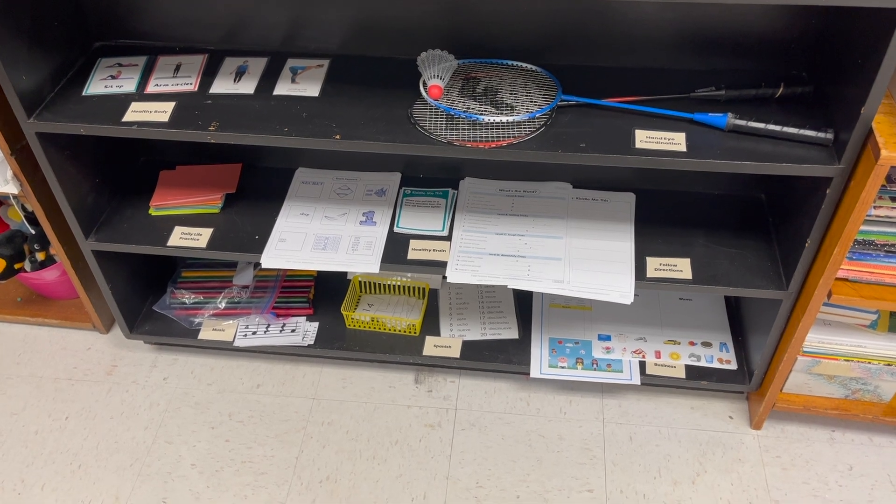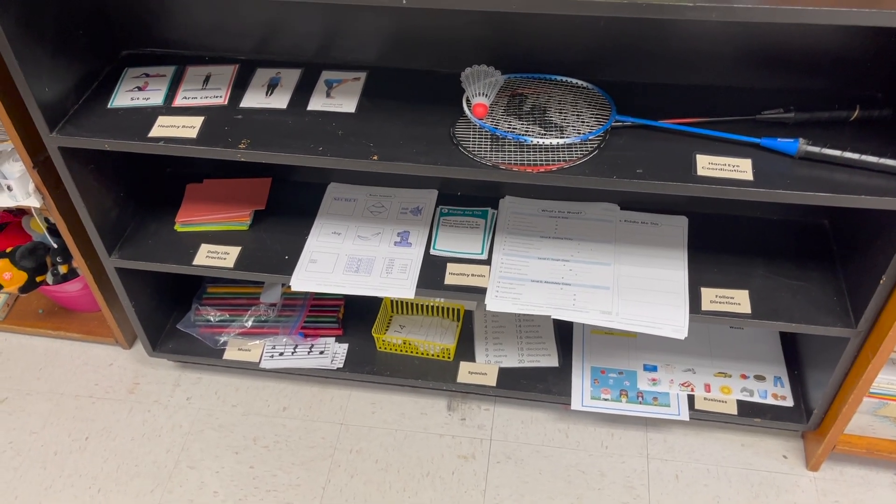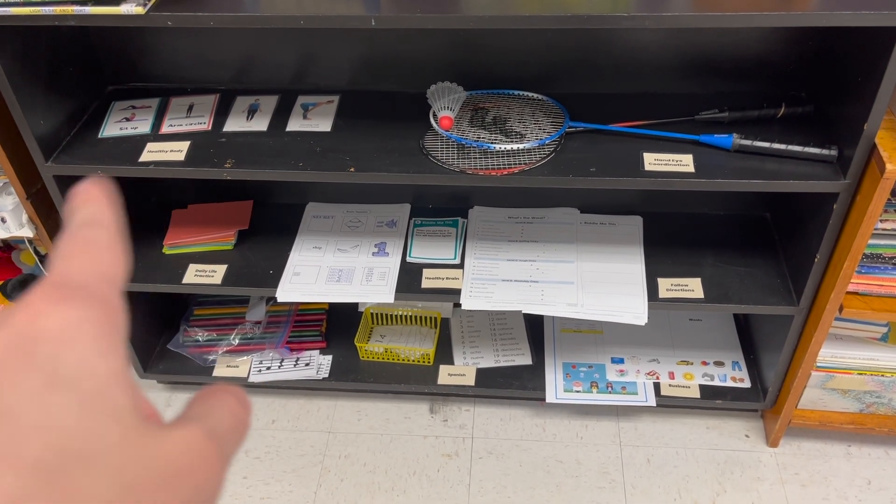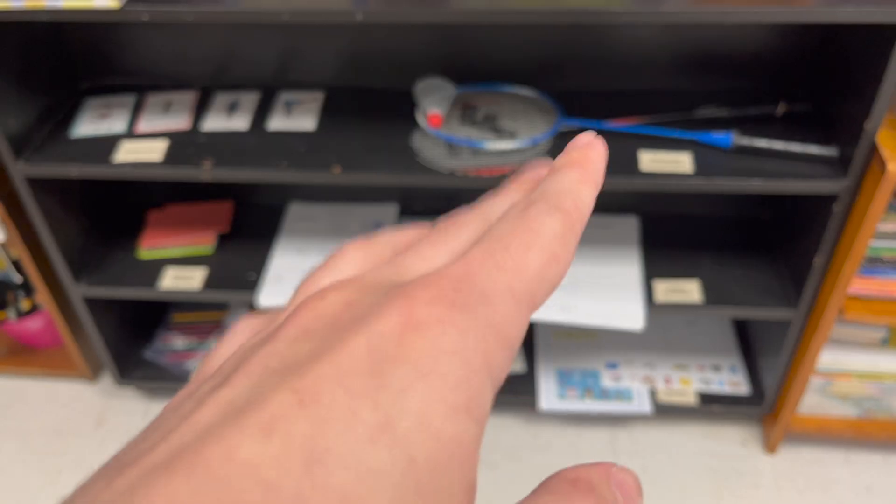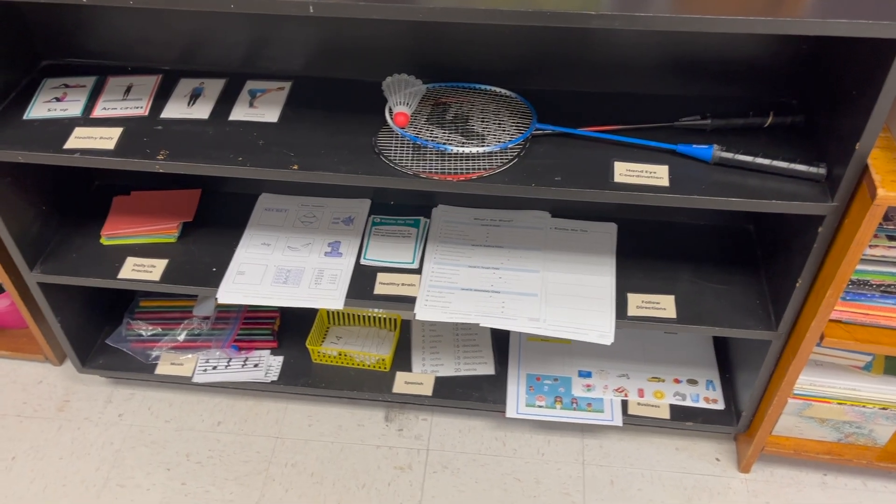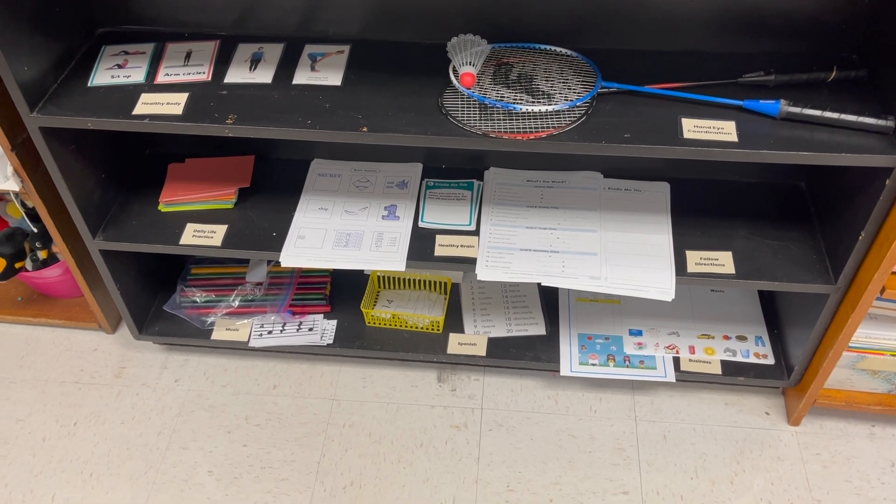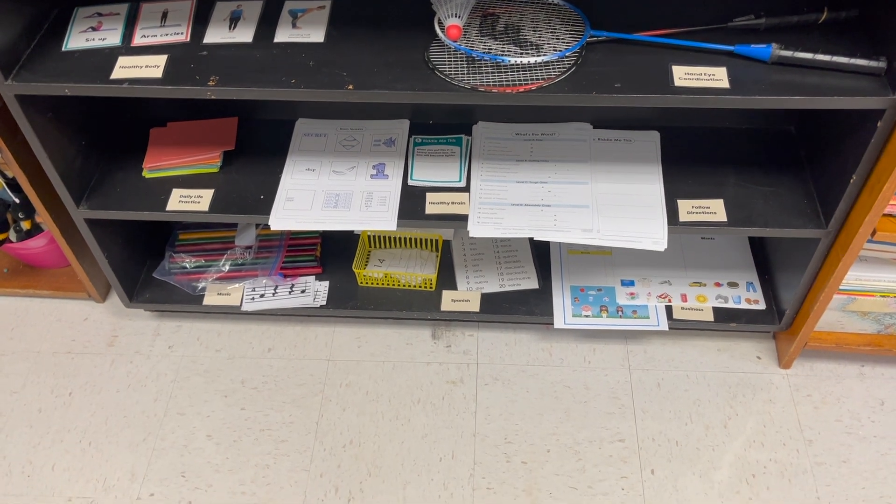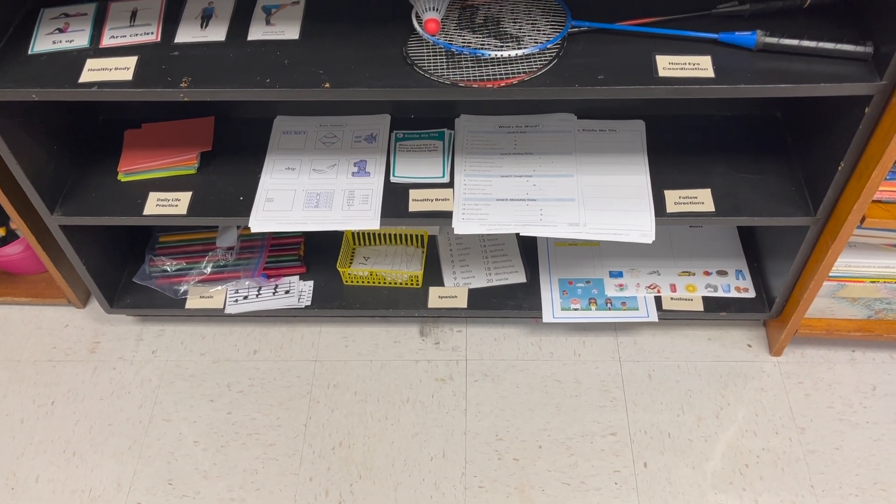So here's some things. I have a Practical Life list that they'll check off each month. I have healthy body, so they'll do exercises. I'll have hand-eye coordination. I really want them to juggle, but we're going to start with badminton while the weather is nice. Daily Life practice. So right now it's going to be addressing an envelope and writing a letter. And then brain teasers for healthy brain.